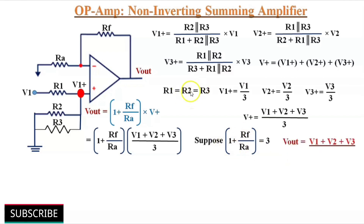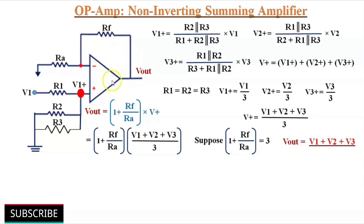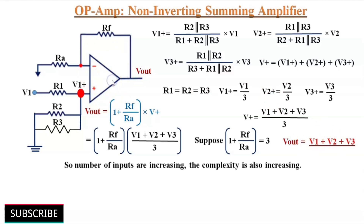So by using equal value input resistors and the value of (1 + Rf/Ra) equal to the number of inputs, we can use this non-inverting summing amplifier to perform addition. In this non-inverting configuration, as the number of input voltages increases, the complexity also increases.